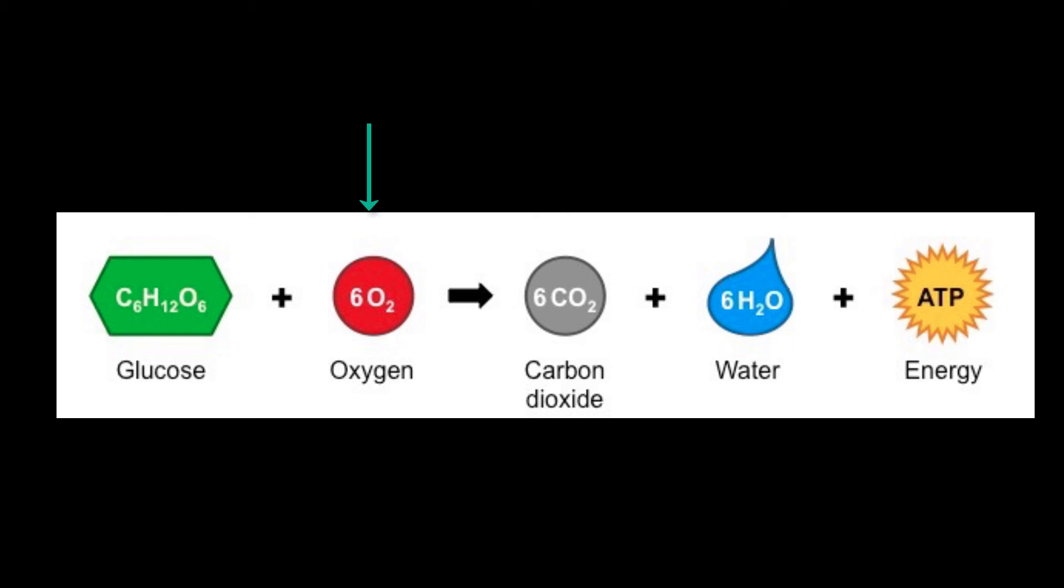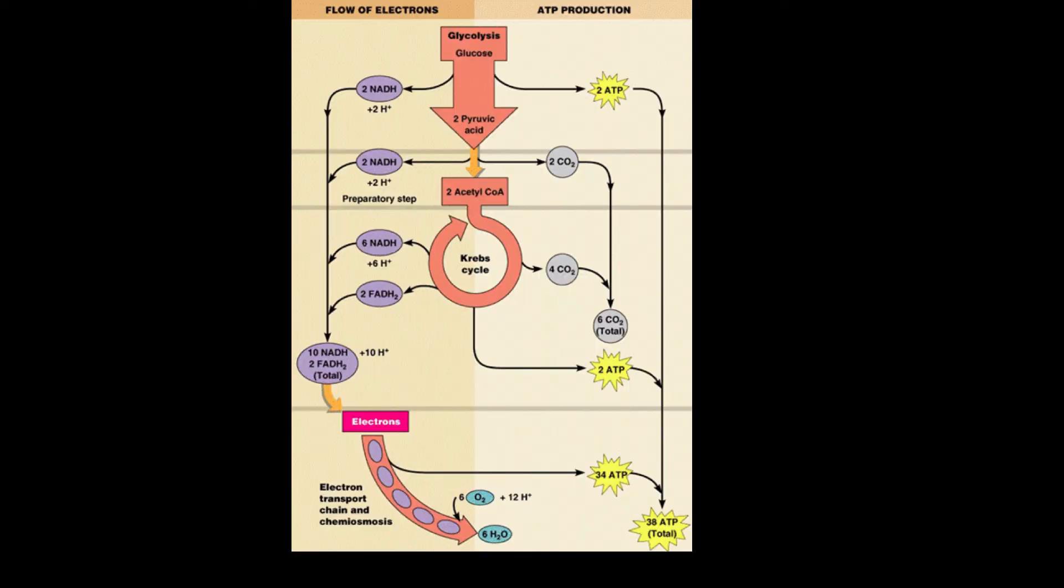Oxygen, which is also on the reactant side, is the final member of the electron transport chain. The electron transport chain is the final step in aerobic energy production.